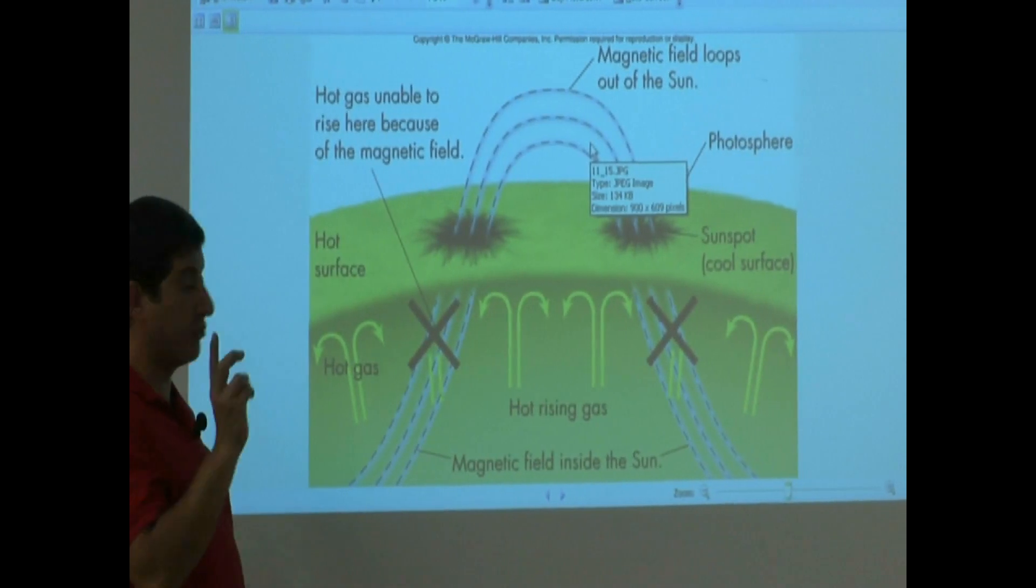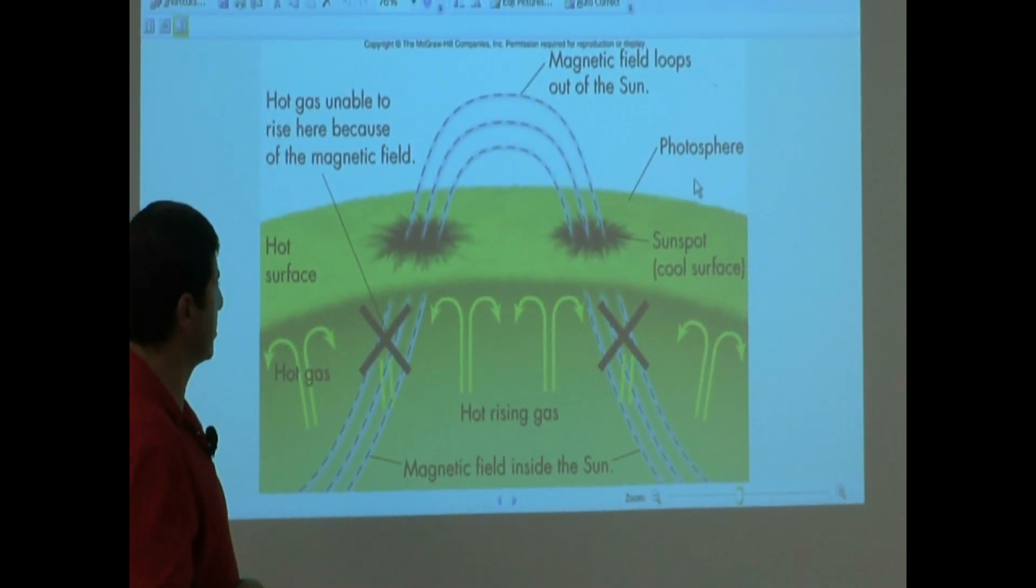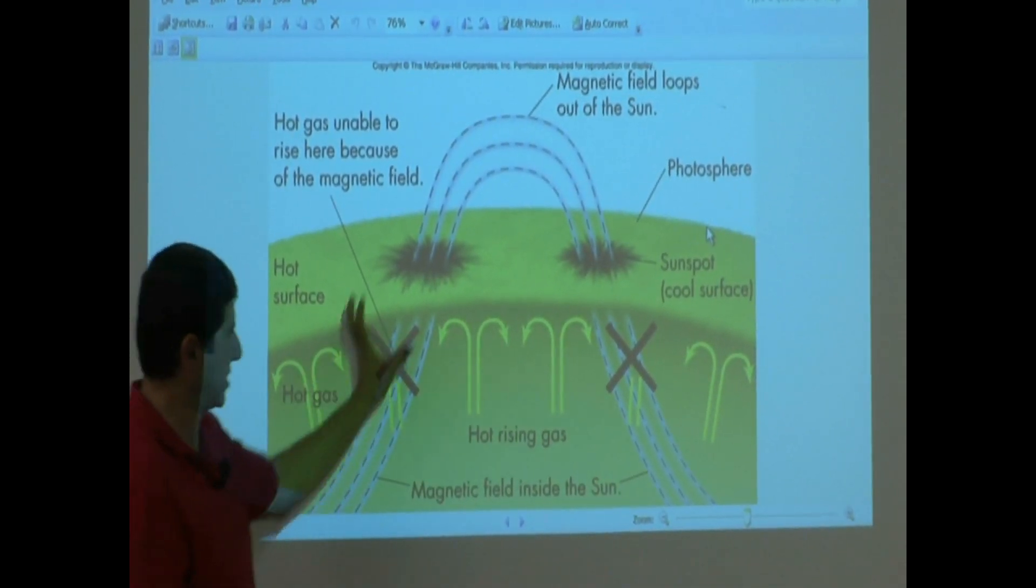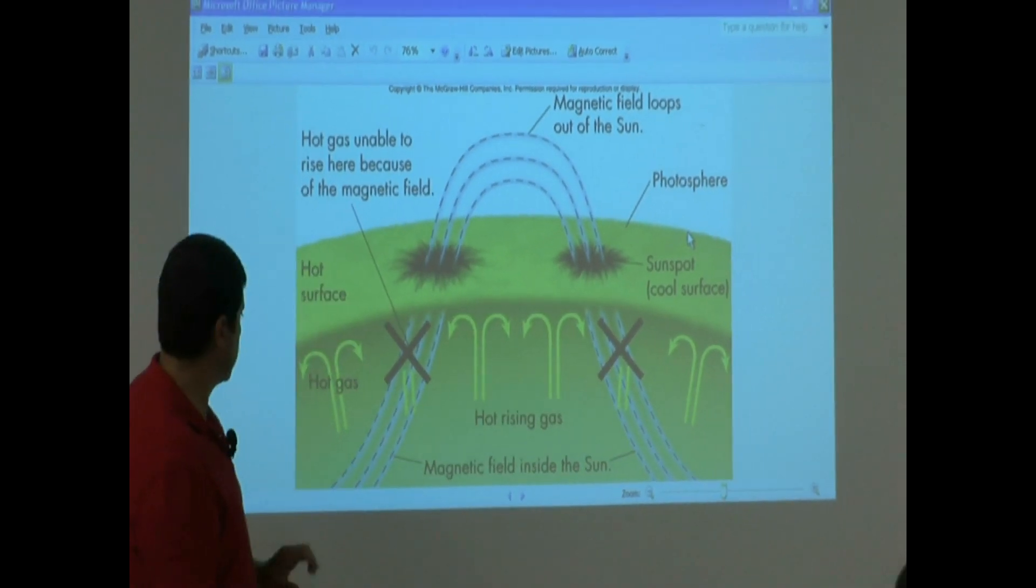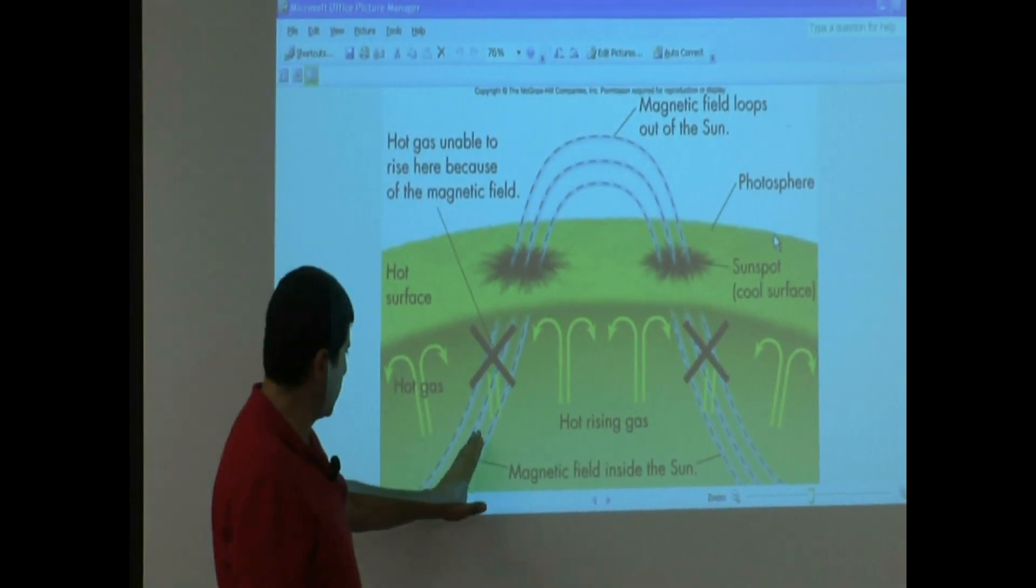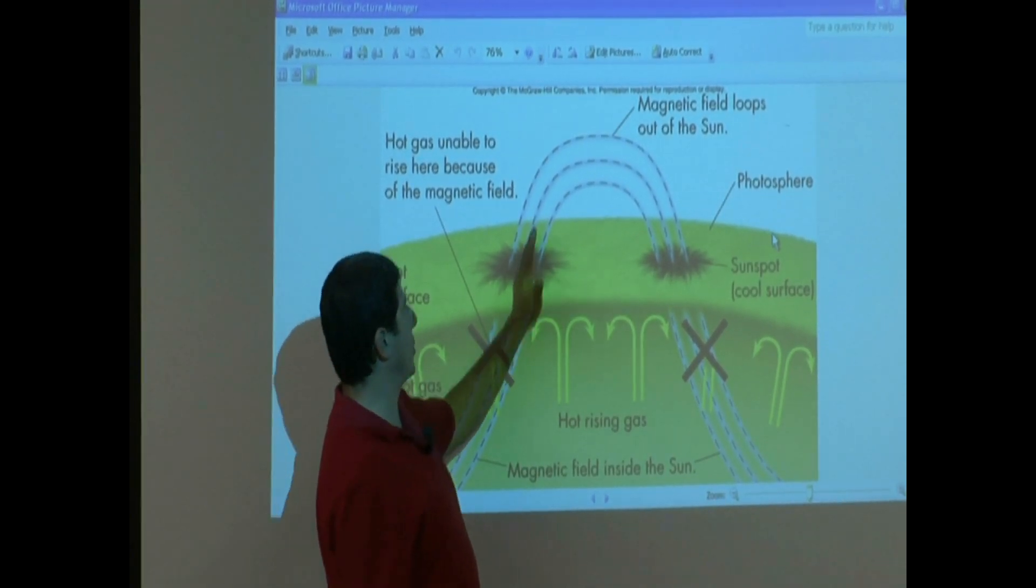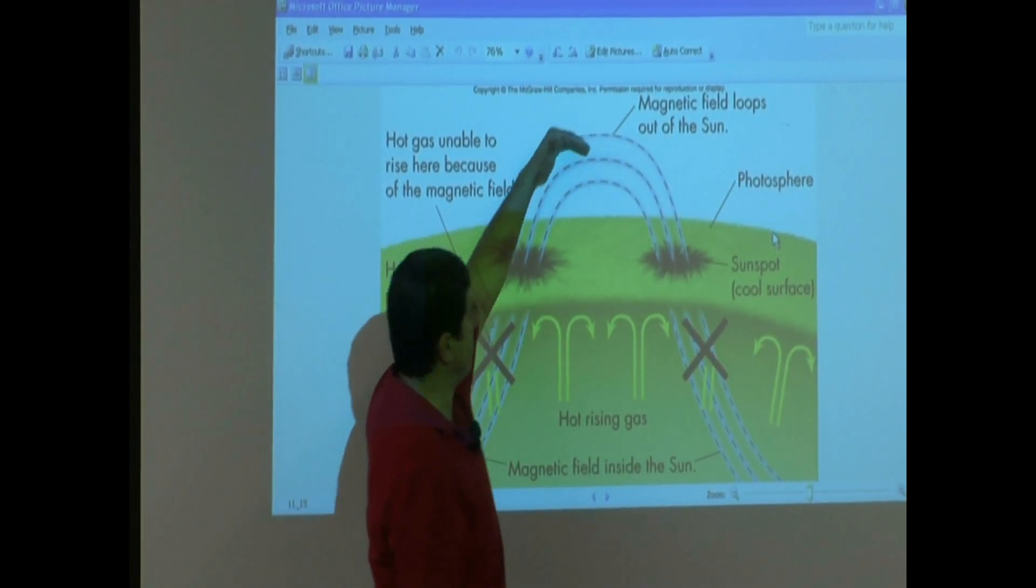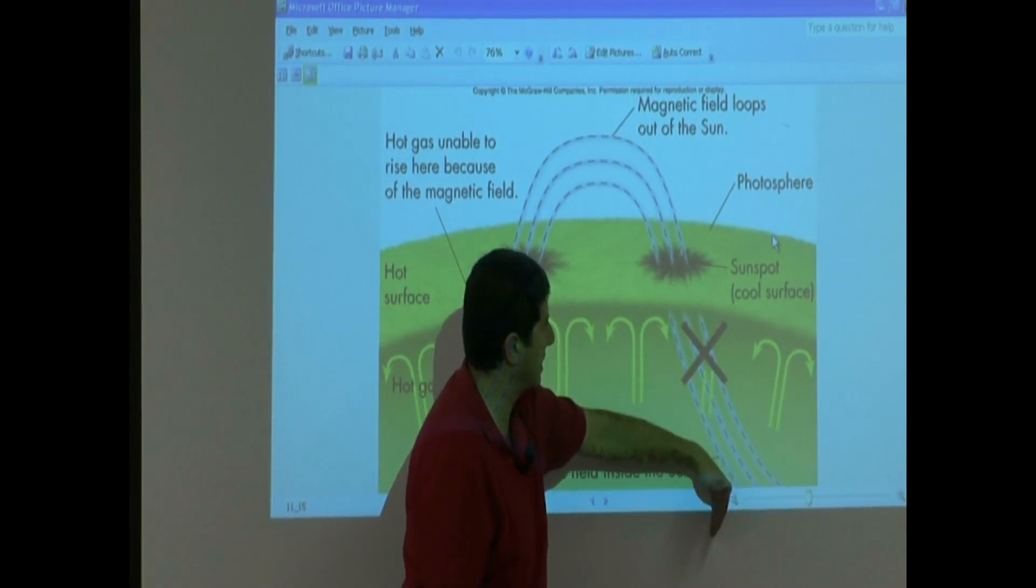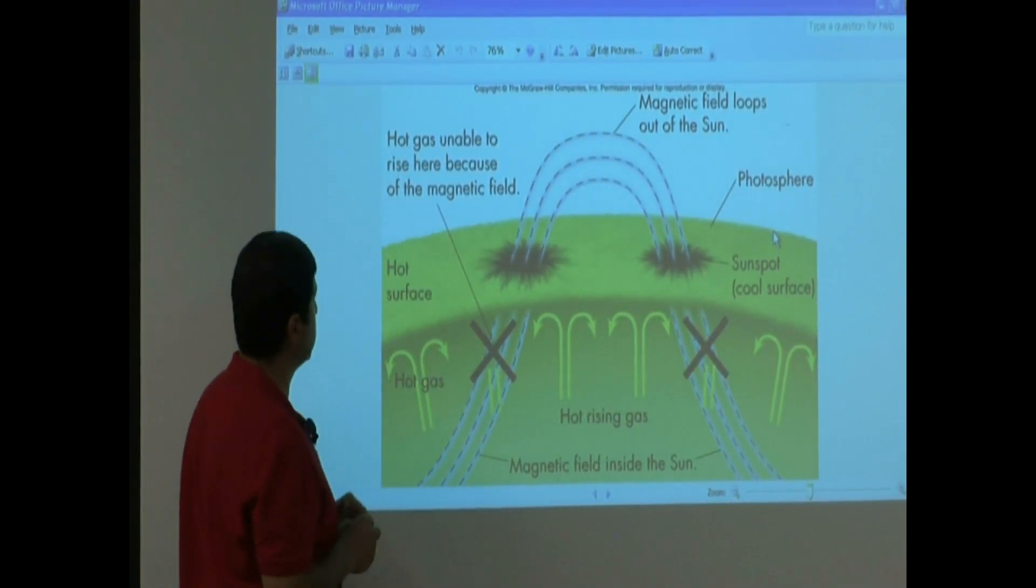This shows you the mechanism of how the sunspot is created. I like this picture. It's not a real picture, it's more like a graphical way of showing. The magnetic field of the sun is coming up here and breaking through the sun's surface and then coming back down. What is that causing?